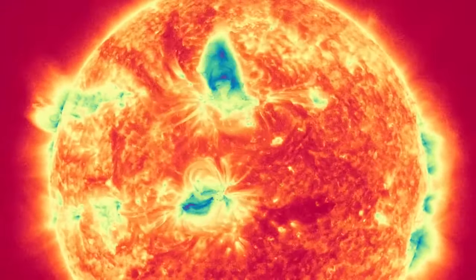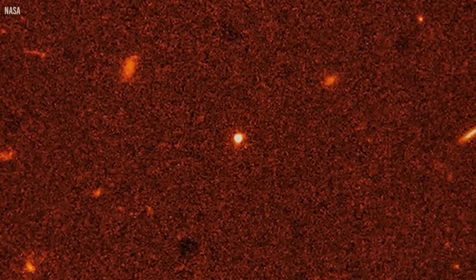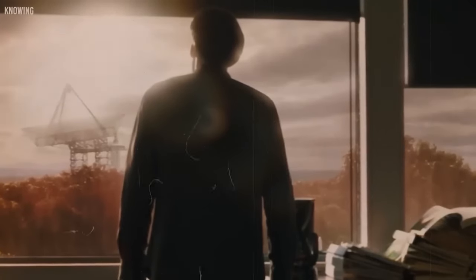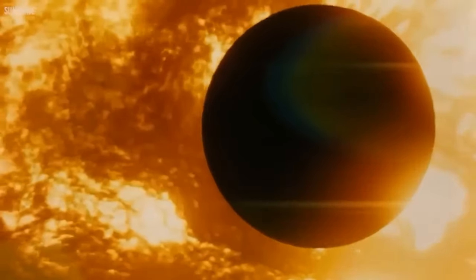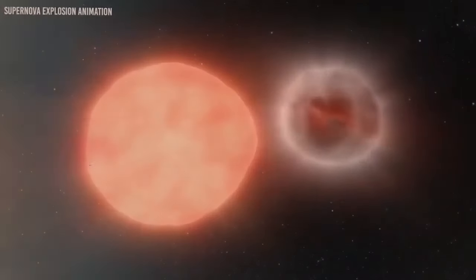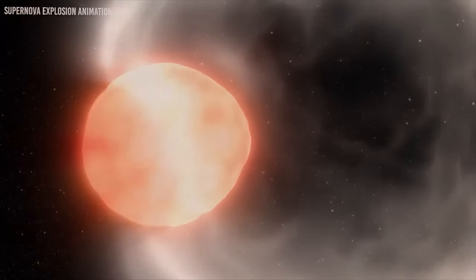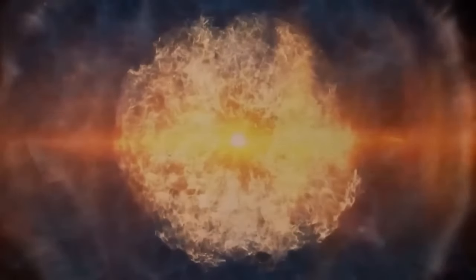During the red supergiant phase, Betelgeuse undergoes a remarkable transformation. The core continues to contract and heat up, enabling the fusion of helium and heavier elements, resulting in the creation of elements such as carbon and oxygen. These fusion processes give rise to even heavier elements, ultimately reaching iron. However, unlike earlier fusion processes, the fusion of iron does not release energy, but instead consumes it. As a consequence, the core is unable to withstand the gravitational forces exerted upon it, leading to an inevitable and catastrophic collapse, triggering a supernova explosion. The signs of instability and irregular behavior observed in Betelgeuse serve as indications of the imminent supernova event that lies ahead. The only piece of the puzzle yet to be determined is precisely when this extraordinary celestial event will occur.